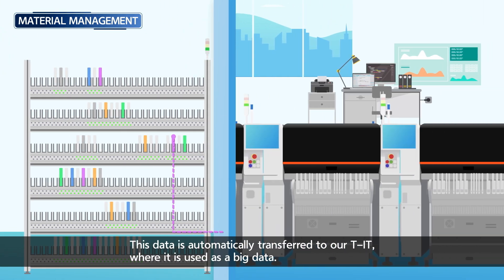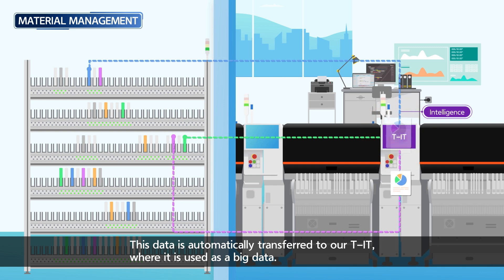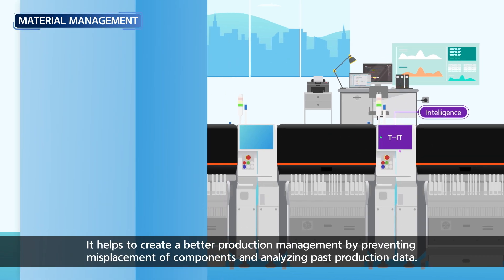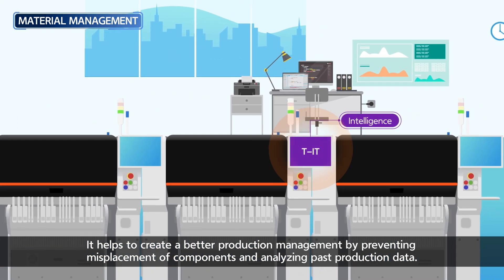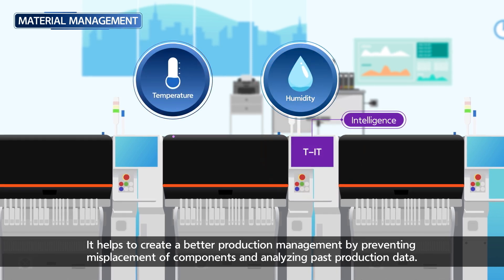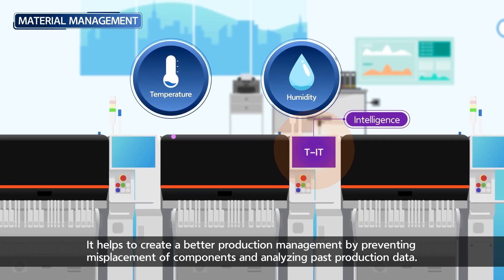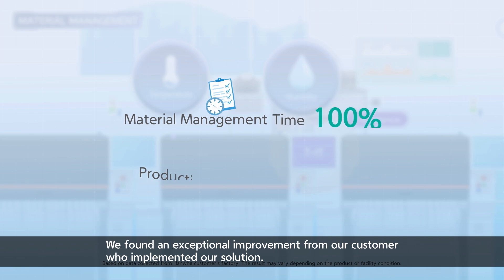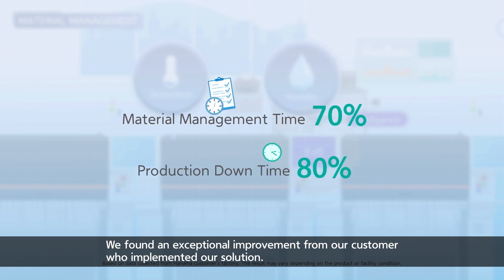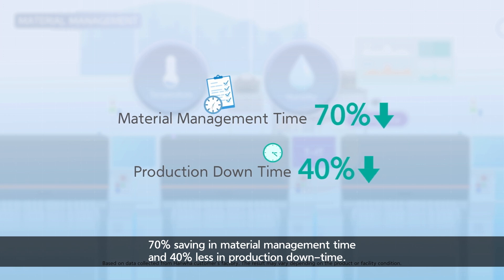This data is automatically transferred to our TIT, where it is used as big data. It helps to create better production management by preventing misplacement of components and analyzing past production data. We found exceptional improvement from our customers: 70% savings in material management time and 40% less production downtime.